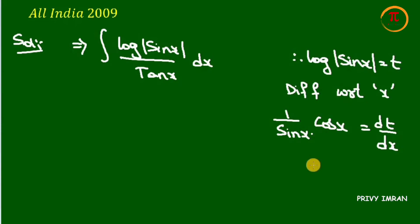Here, cos x over sin x can be written as cot x, so cot x dx equals dt. Now I'll rewrite the integral of log |sin x| over tan x as log |sin x| times cot x dx.